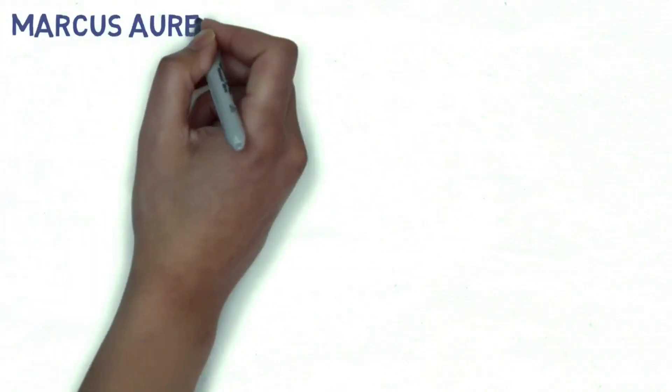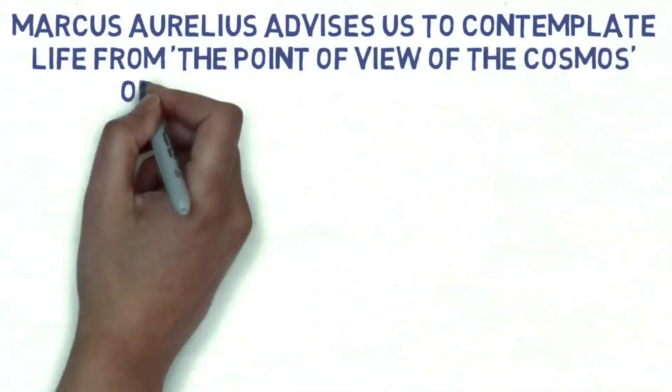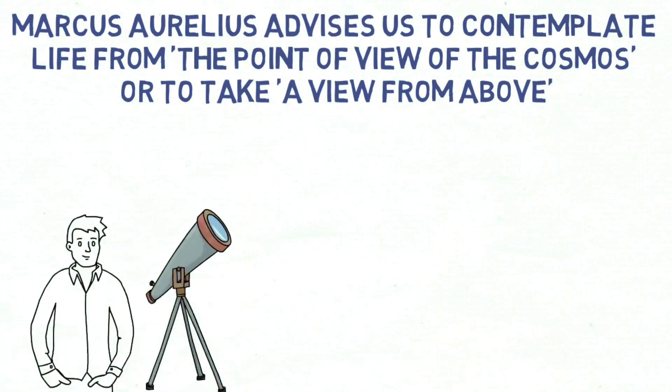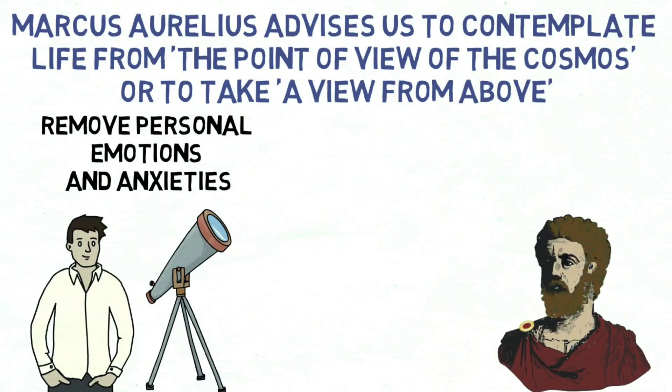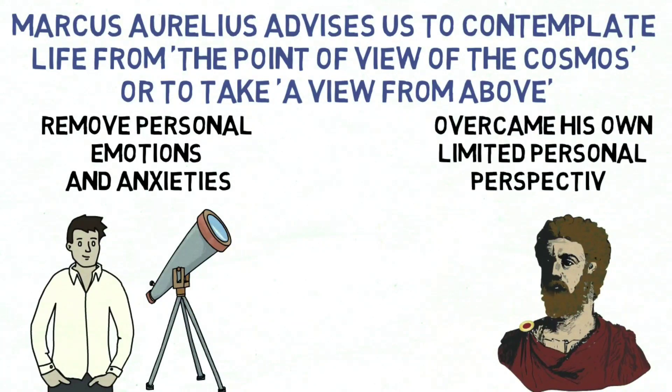Marcus Aurelius advises us to contemplate life from the point of view of the cosmos or to take a view from above. A view from above means taking a zoomed out perspective of your life and looking at yourself and your day as if you were watching from a third person's perspective, to remove personal emotions and anxieties. It is known that, in his evenings, Aurelius would reflect on his life from the point of view of the cosmos to overcome his own limited personal perspective.